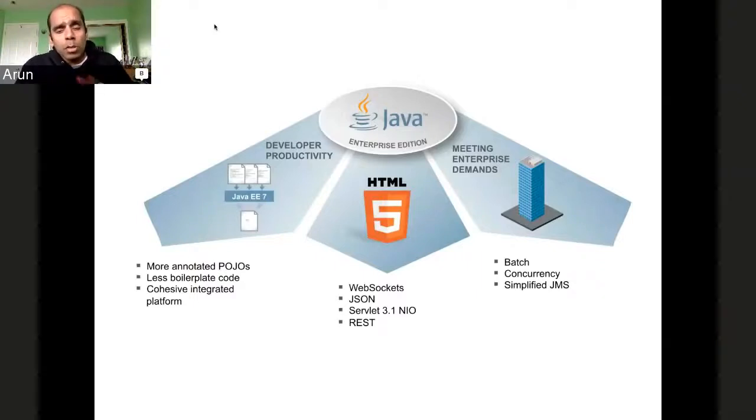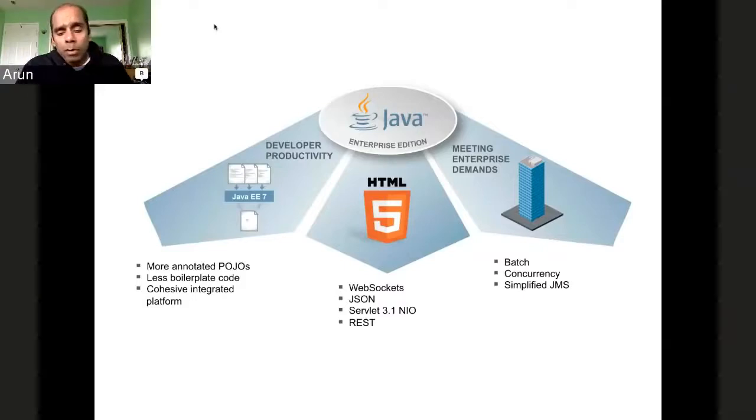The last theme for Java EE 7 was meeting enterprise demands by adding two new specifications. One is standard batch processing, which used to be called Spring Batch, and now there's a standard way of doing it. There's also the ability to spin up new threads that can run in the user context. And the JMS specification, which has been heavily used for M2M messaging, has been extremely simplified. This is not a Java EE tutorial, so there is a lot of good content available on Java EE that I'd recommend.